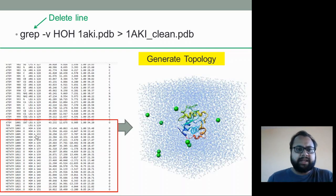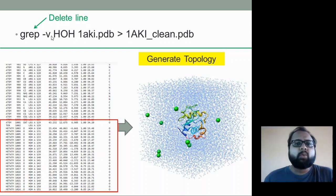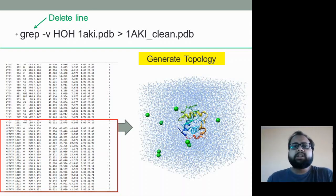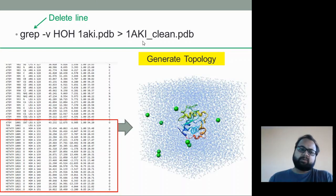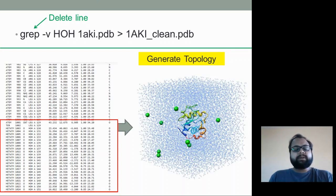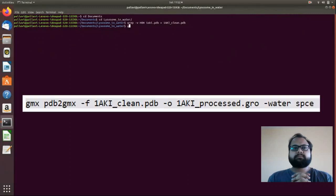We remove them using grep, which is a Linux command for deleting lines. We delete all lines where HOH is present. The 1aki.pdb is our downloaded PDB file, and we convert it into 1aki_clean.pdb. This is how you create the first step — removing the hetero atoms or water molecules.